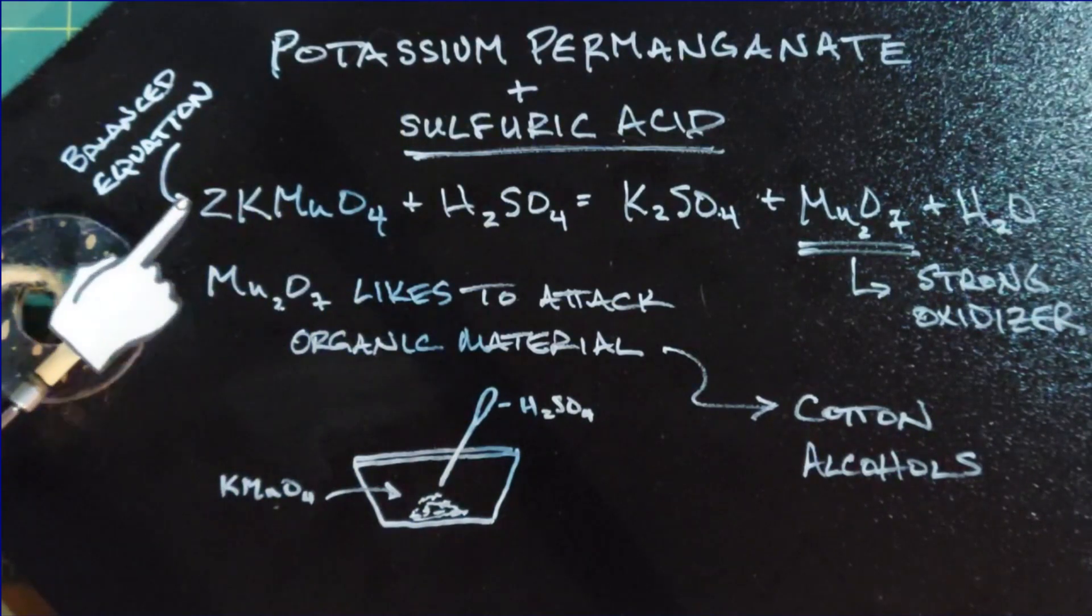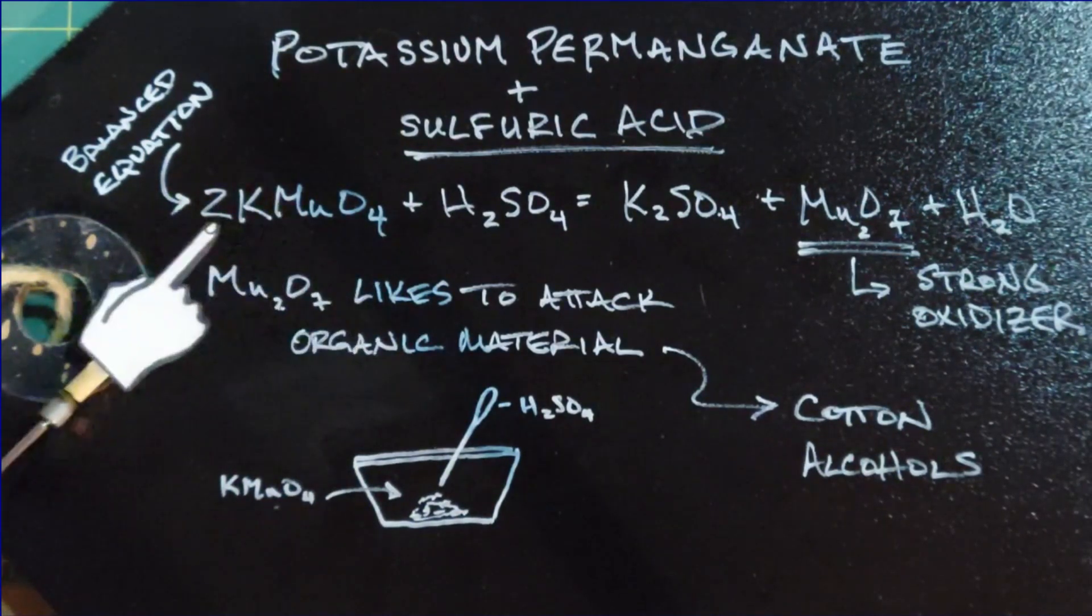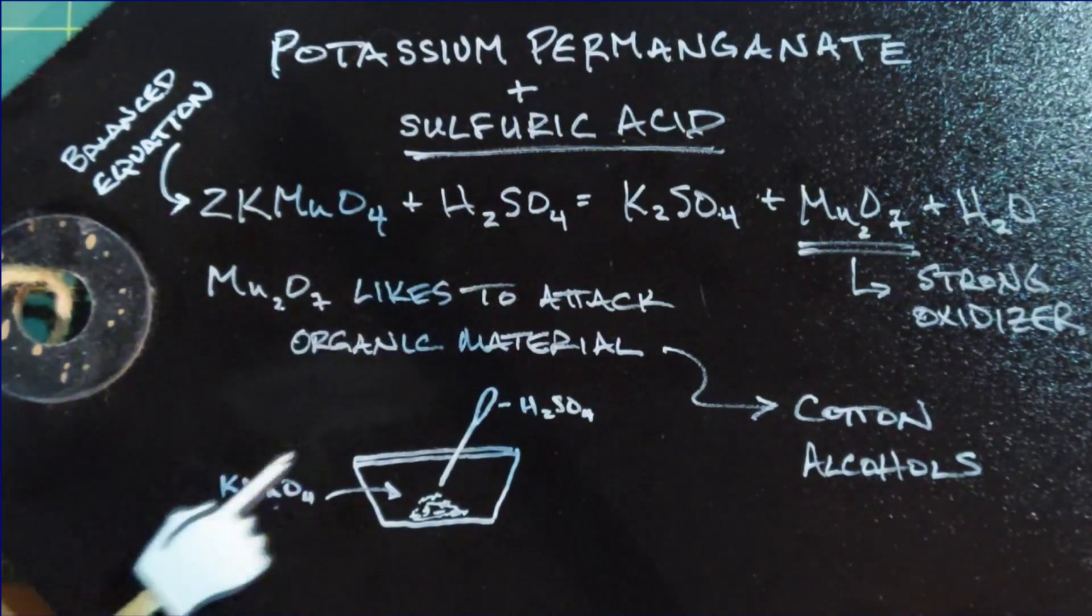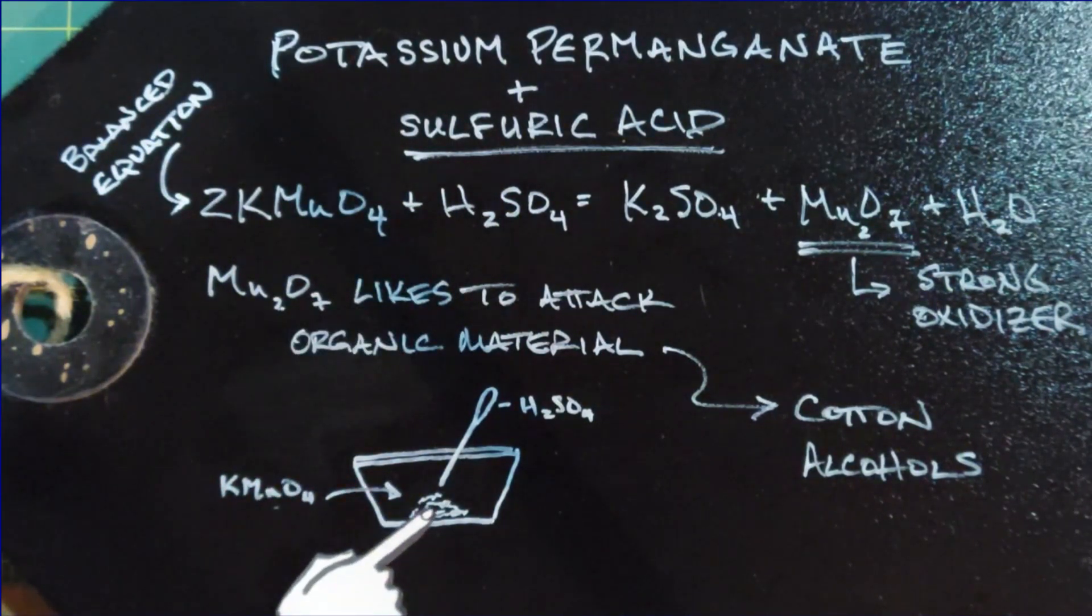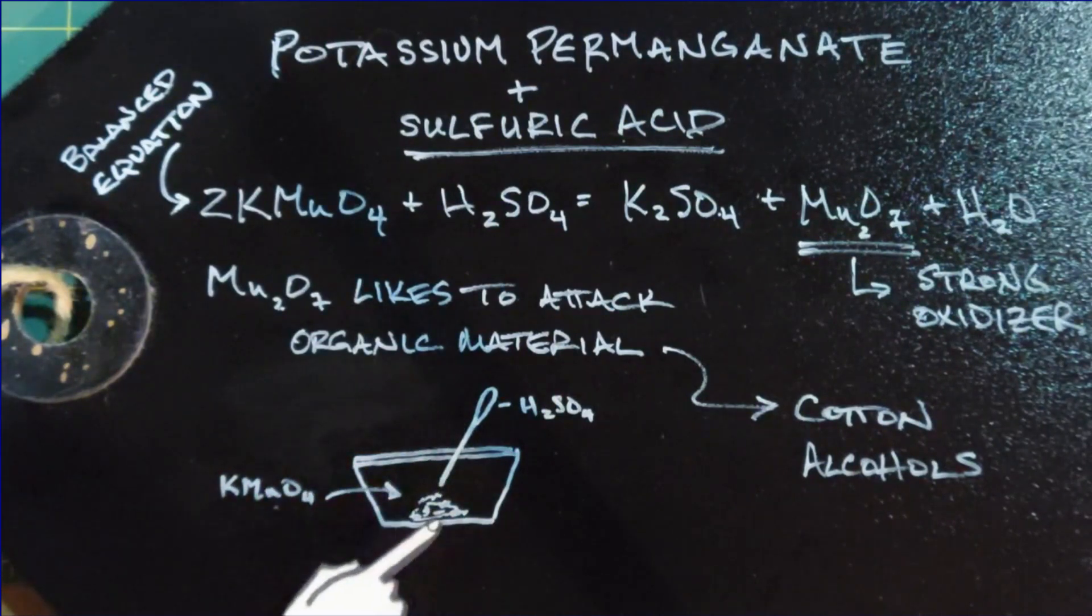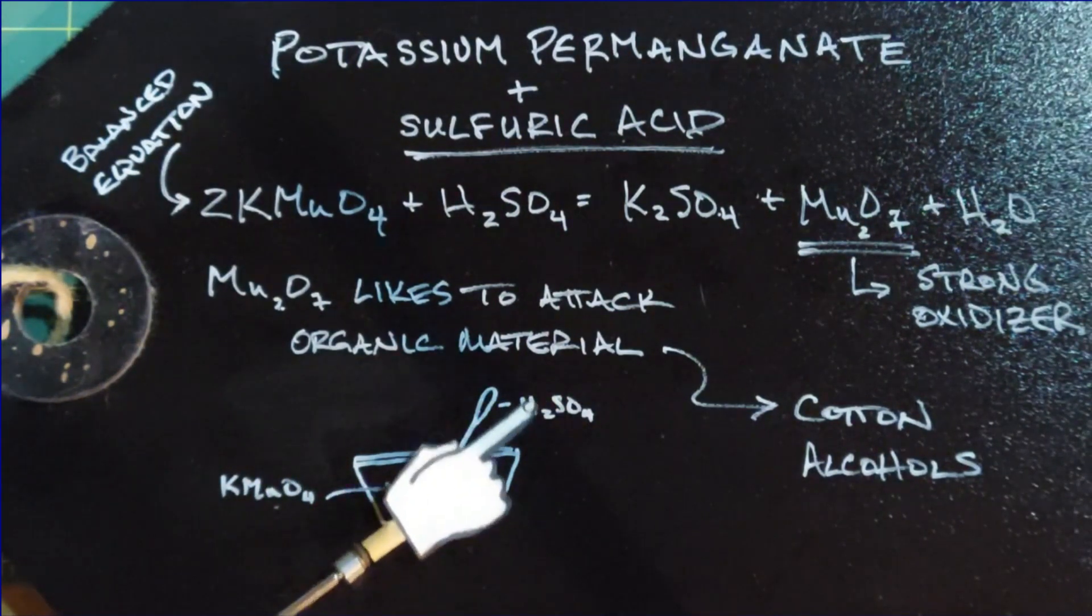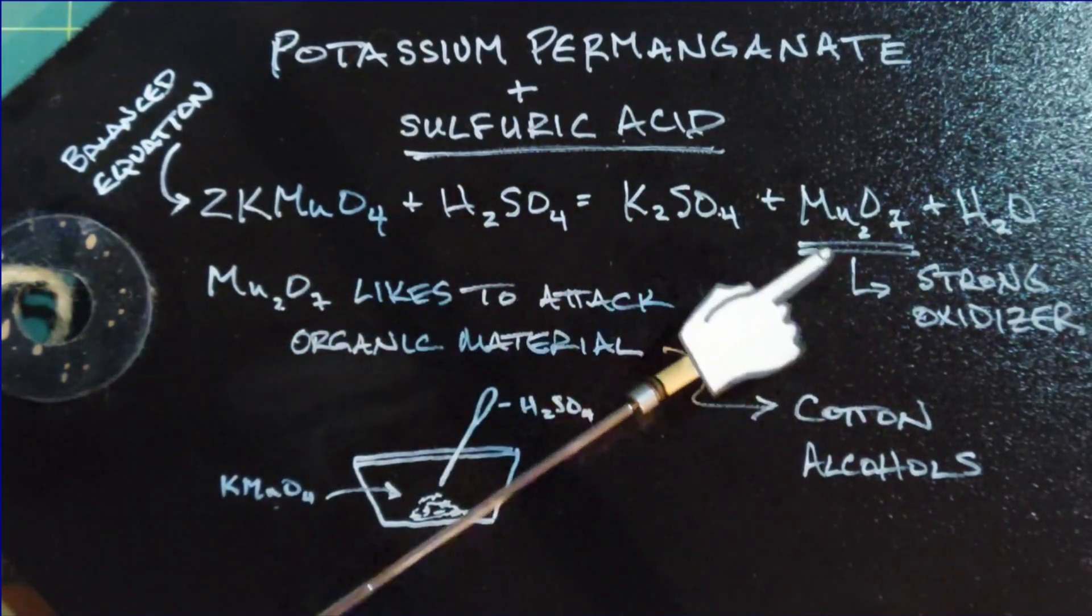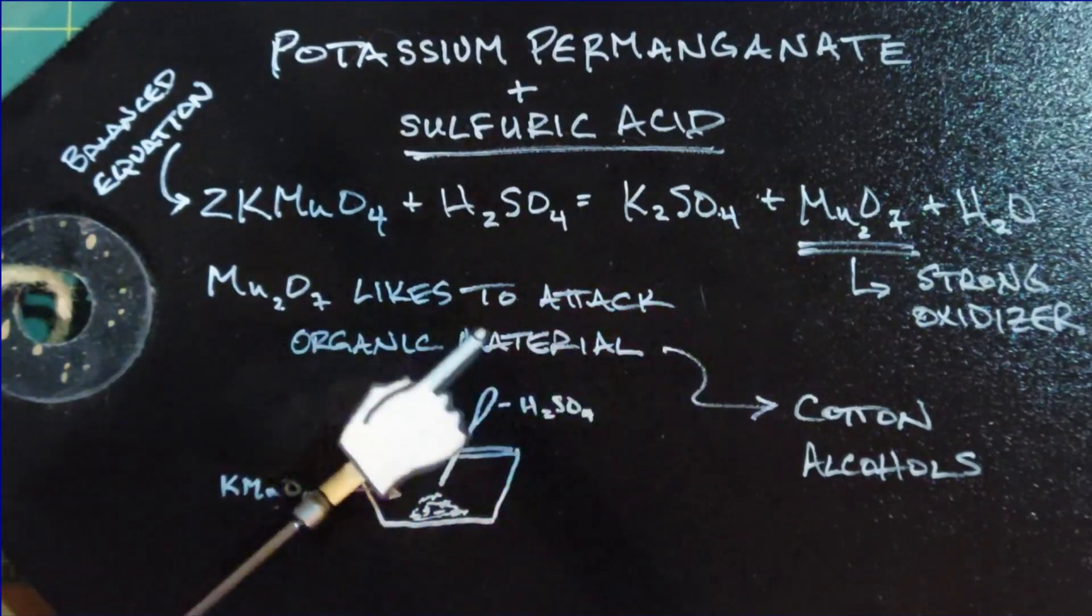As we can see from the equation here, we want twice as much of the potassium permanganate as it has sulfuric acid. So what I'm going to do is make a small pile of the potassium permanganate and then slowly add the H2SO4, or sulfuric acid, until it's saturated. If I put too much of this in, it becomes unbalanced and you will not get the strong oxidizer formed in quantities necessary to attack the organic material.